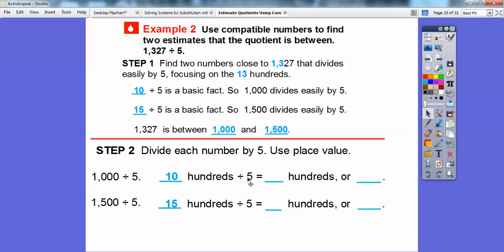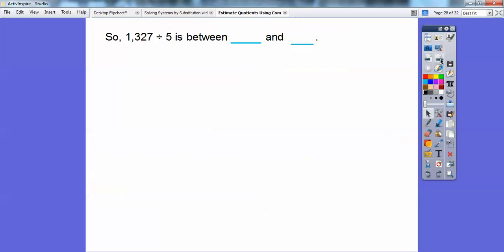So 10 divided by 5 is 2, so this is going to be 200. 15 divided by 5 is going to be 3, so this is going to be 300 right there. So that's what goes right there. And then, so this is 200s or 200, and this is 300s or 300. So 1,327 divided by 5 is between 200 and 300.